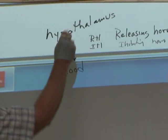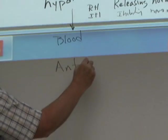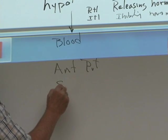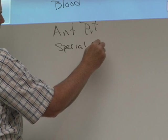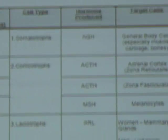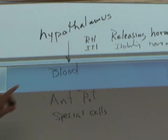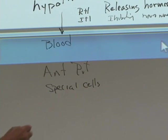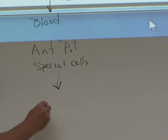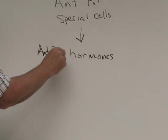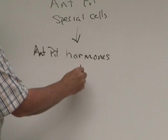In the anterior pituitary, there are special cells that have receptors for these hormones — somatotroph, corticotroph, lactotroph, thyrotroph, gonadotroph. Those are the cells of the anterior pituitary that the releasing and inhibiting hormones target. The anterior pituitary cells also release their own hormones, called anterior pituitary hormones, which are released to the blood and go to other target tissues or cells.